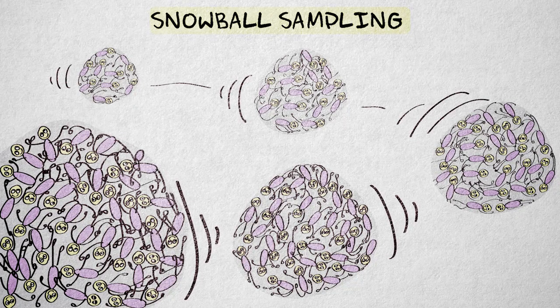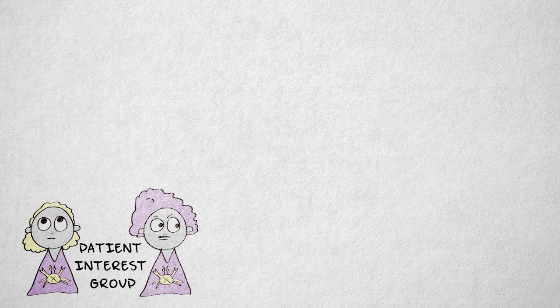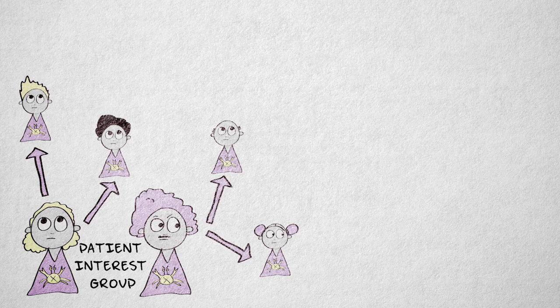Suppose we want to sample patients who suffer from a rare type of cancer. We could approach a patient interest group, for example, and ask the initial participants if they can put us in contact with other patients that they know through other interest groups or through their hospital visits.